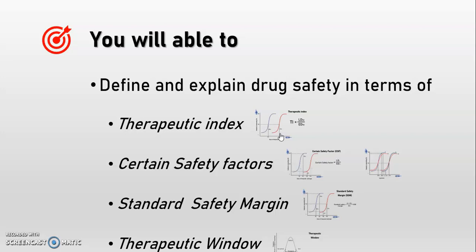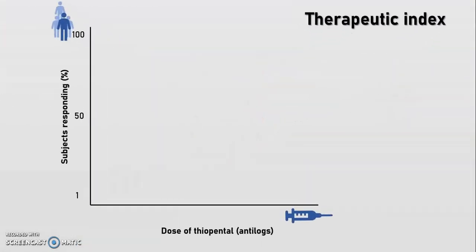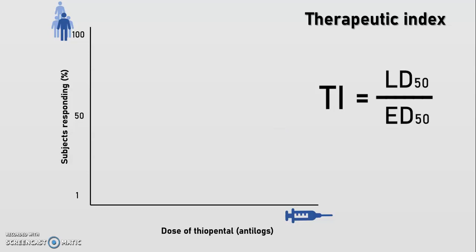Let's first look at the therapeutic index, also called the margin of safety. The safety of a drug depends on how far the dose producing a desirable effect is separated from the dose eliciting toxic effects. To find the margin of safety, we calculate or read from a graph the median lethal dose (LD50) and the median effective dose (ED50), then express their ratio. This ratio is called the therapeutic ratio or therapeutic index. For a safe drug, the therapeutic index should be greater than 1; a drug with a larger LD50 but smaller ED50 is considered more safe.